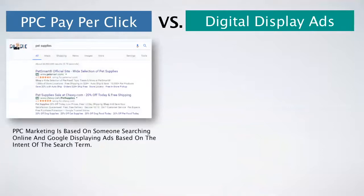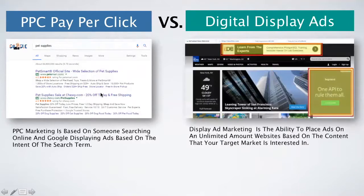Pay-per-click is based on someone searching online and Google displaying ads based on the intent of that search term, as you'll see here. Digital display ads, on the other hand, give you the ability to place ads on an unlimited amount of websites based on the content that your target market is interested in.